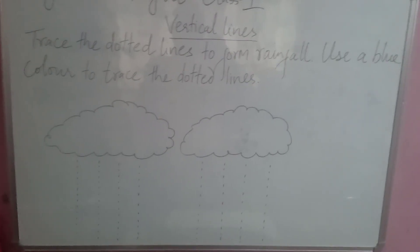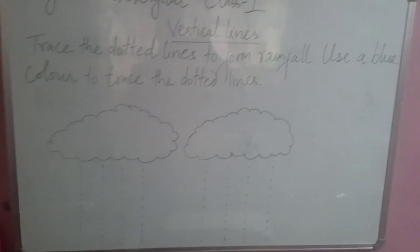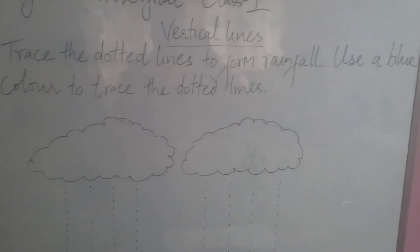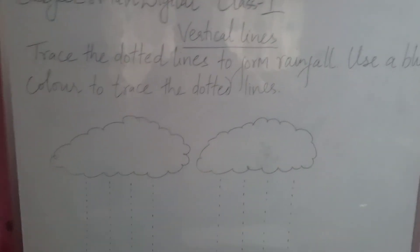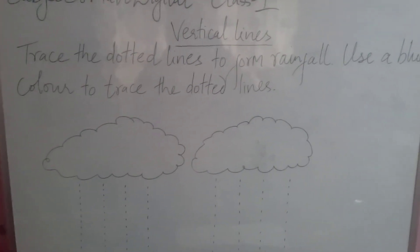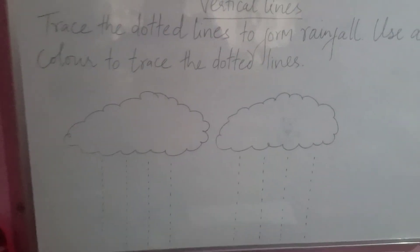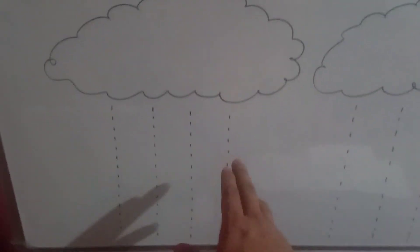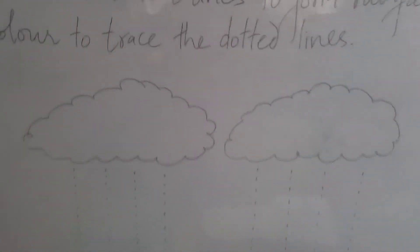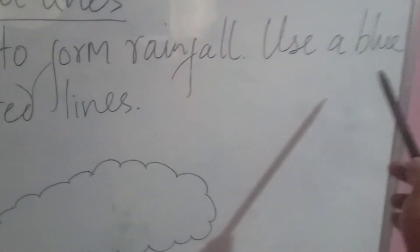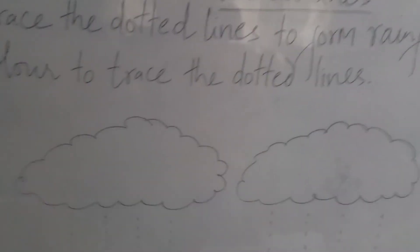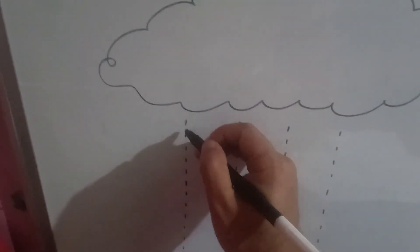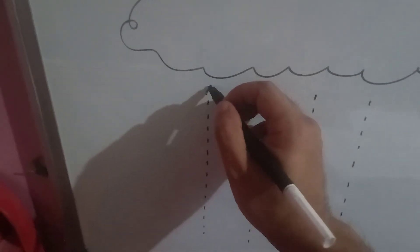Now let's do some exercises. First is vertical lines. Your question is: trace the dotted lines to form rainfall, and use blue color to trace the dotted lines. So you have to use blue color to trace the dotted lines that represent rainfall.